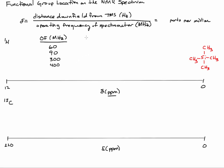One part per million in terms of hertz is exactly the same number. So 60, 90, 300, 400.